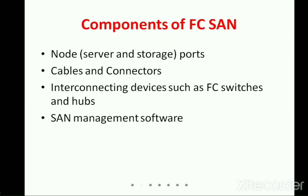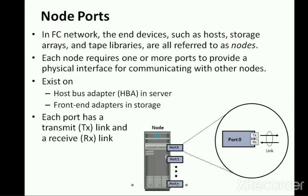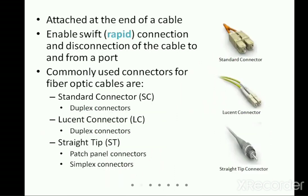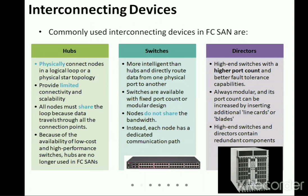Welcome to today's class. In the previous class we covered the components of Fiber Channel Storage Area Network — we discussed nodes, cables, and connectors. We saw the types of nodes available, the ports for transmitting and receiving, and the cables — copper or optical — including single mode and multi-mode transmission, distance, beam characteristics, and attenuation. We also covered standard, loosened, and straight tip connectors and how they help in data transfer.